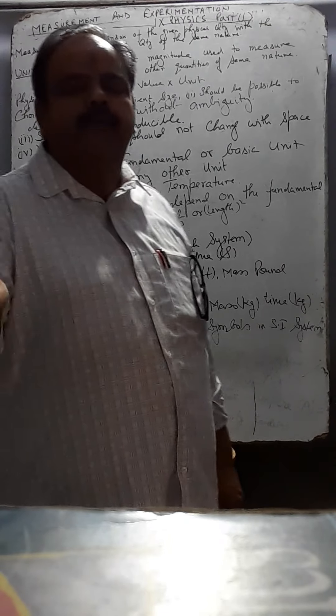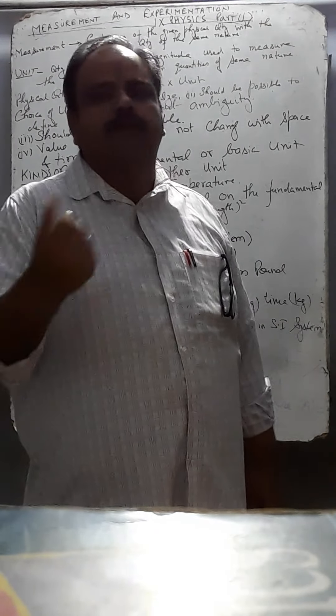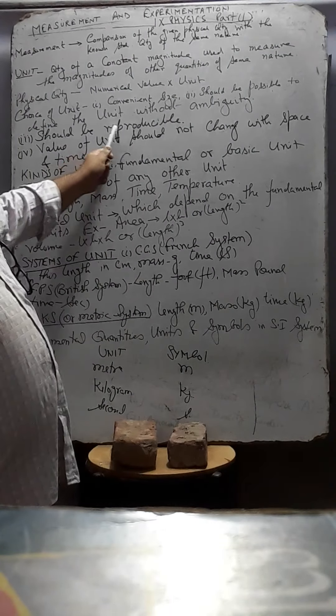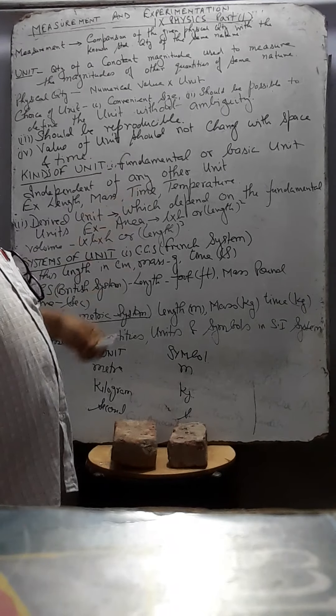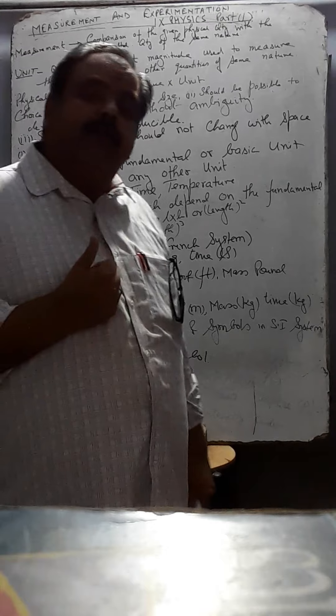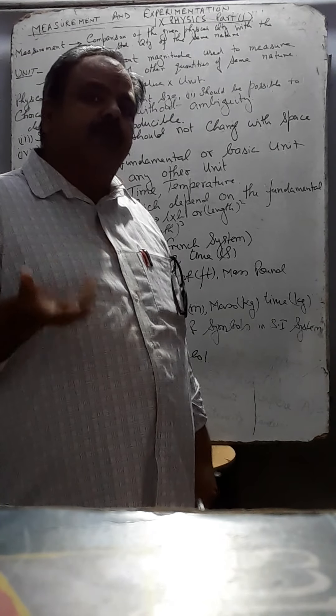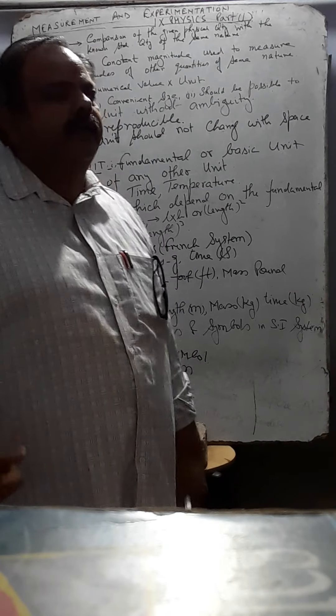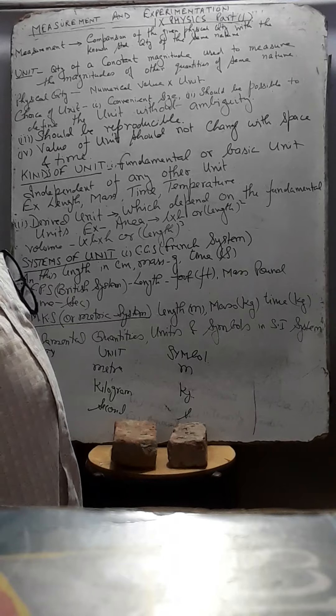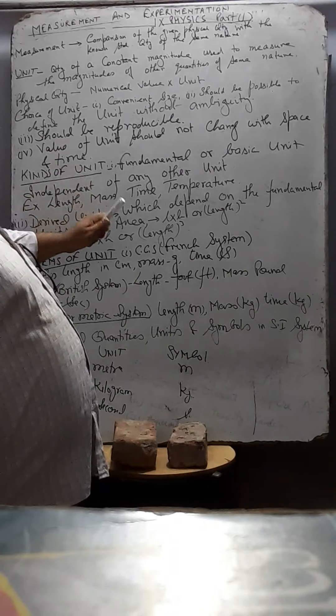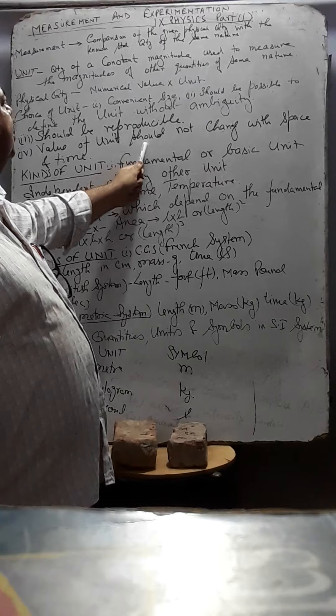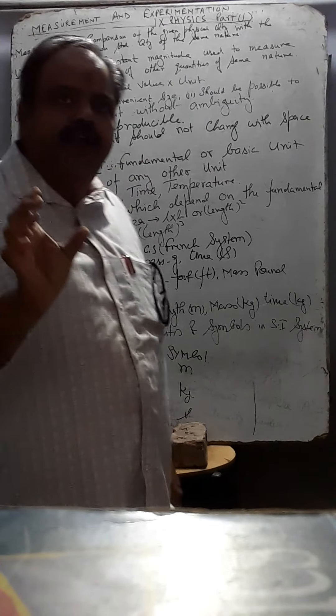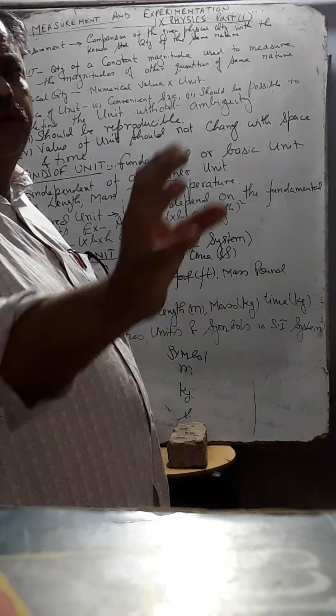Meter per second. How much distance is covered by meter per second. It is the unit of the speed, speed of the velocity. So, it can be easily defined. Unit should be reproducible. Reproducible means meter per second. I will give you an example. Meter is the unit of length. Second is the unit of time. Meter per second. Distance is the water for time taken. So, it can be reproducible. Number four point is value of the unit should not change with space and time. Value should remain same with the space and time. It should not vary.